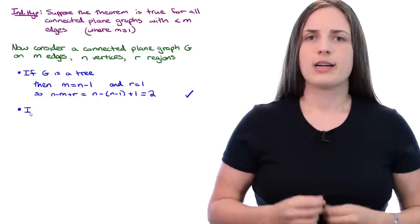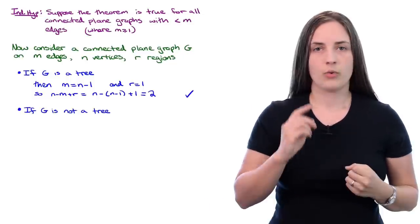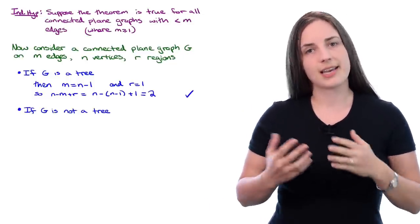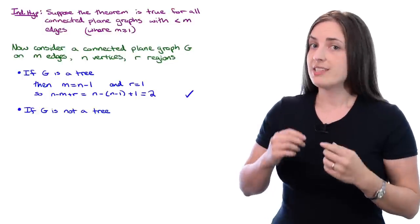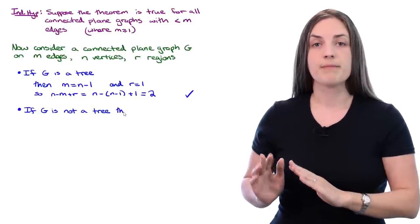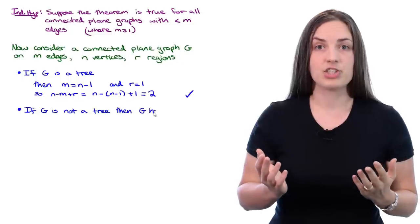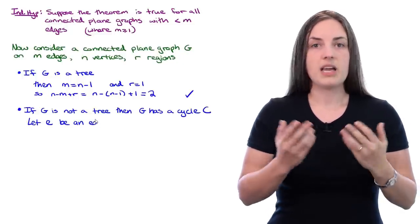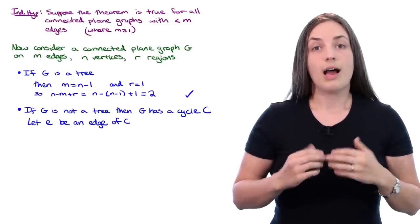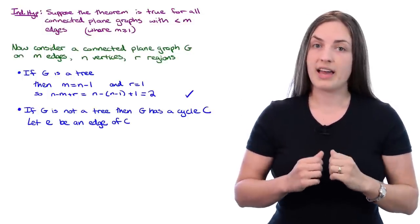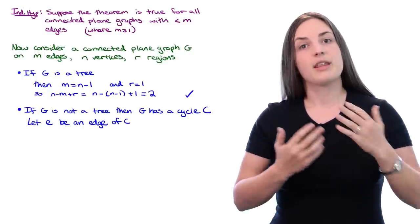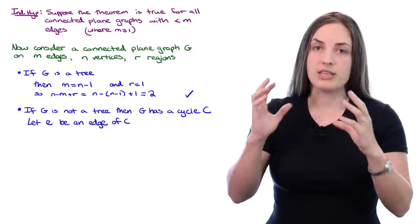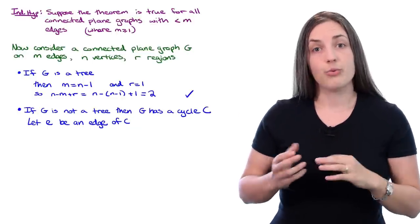Next we look at the case where G is not a tree. We already know that G is connected. So if G is connected but not a tree, then G must have a cycle C. Now we'll let E be an edge on our cycle C. Our aim is to remove that edge E and apply the inductive hypothesis to the smaller graph G without E.